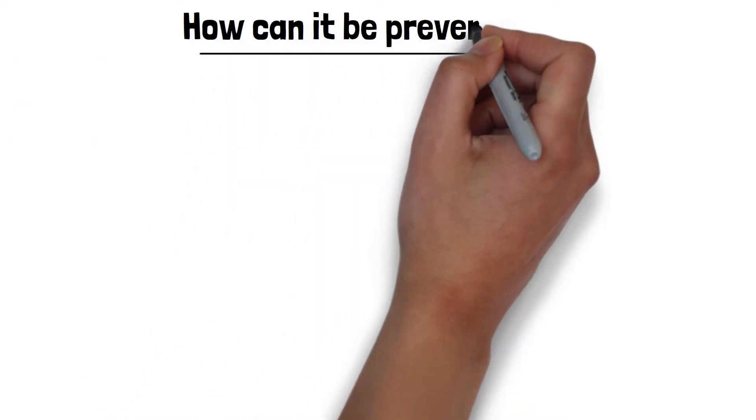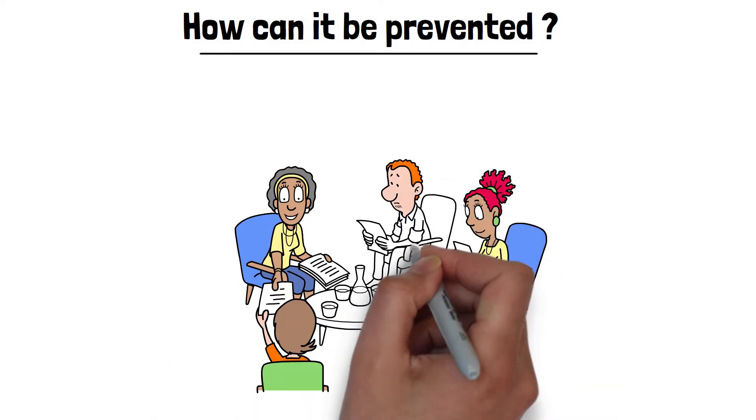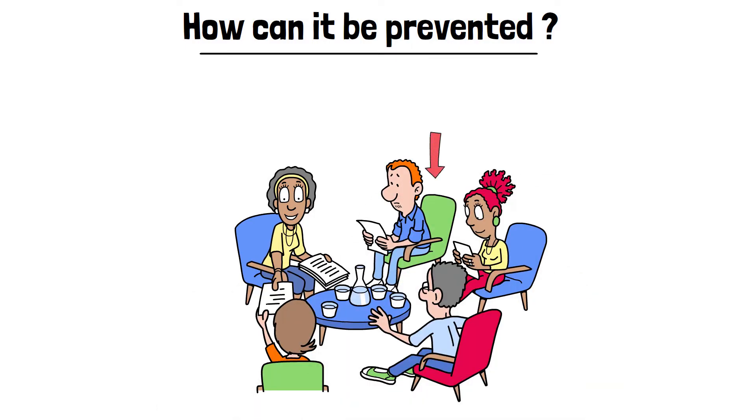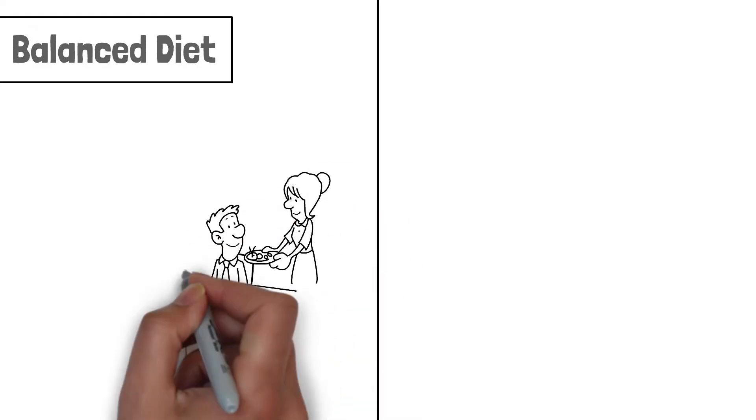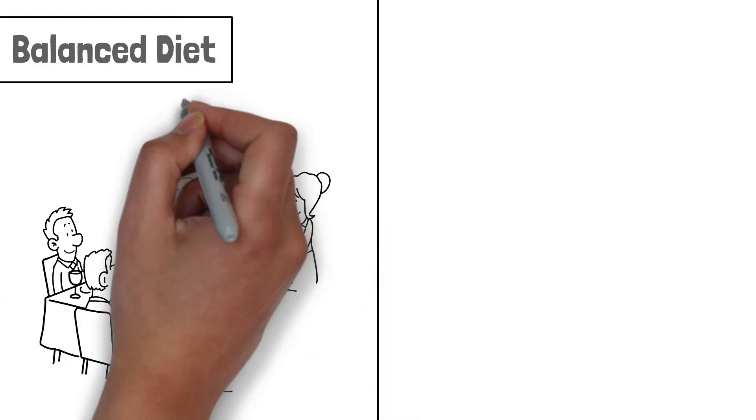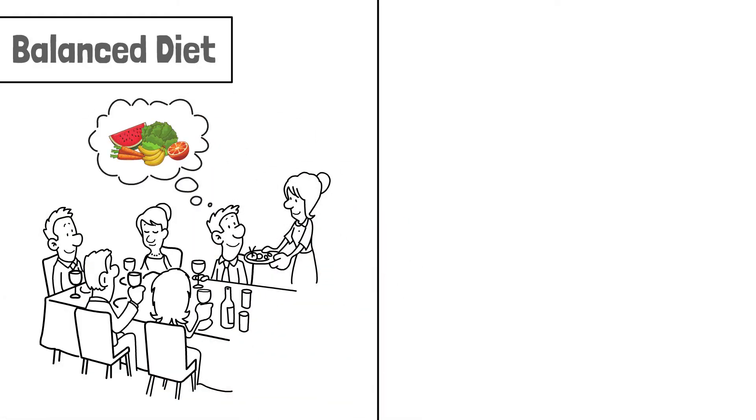Now let's move to the next point, where we will see how it can be prevented. So let's look and understand. Friends, although it's not possible to avoid every cause, there are some ways by which we can reduce the chances of its occurrence. Here are some measures provided. So let's start with a balanced diet. Eat nutritious and balanced food that keeps the brain strong, like green vegetables, fruits, nuts, and whole grains.